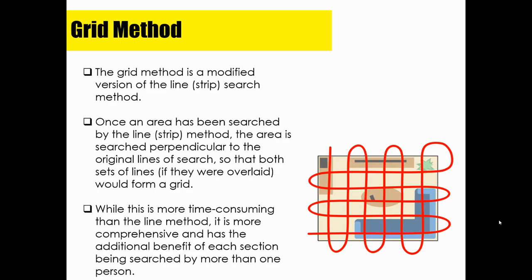The grid method is a modified version of the line or strip search method. Once an area has been searched by the line or strip method, the area is searched again perpendicular to the original lines, so that both sets of lines, if overlaid, would form a grid. While this is more time consuming than the line search, it is more comprehensive and has the additional benefit of each section being searched more than once and by more than one person.